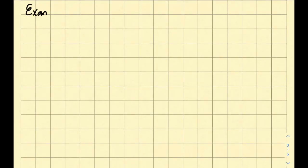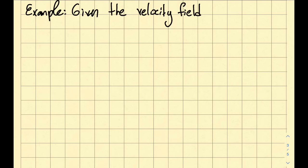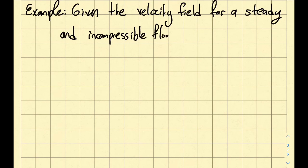Okay, now let's solve an example for the stream function concepts that we have covered. So in this problem, I'm given the velocity field for a steady, which means it's not a function of time, and incompressible flow in a corner.